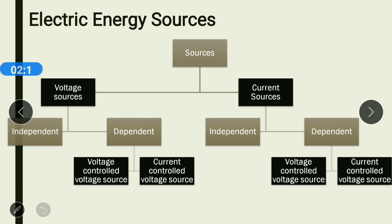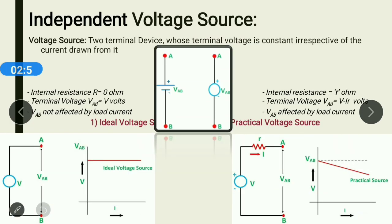That two-terminal device in the case of DC circuits is subdivided into two parts. One type of source is known as voltage sources and another type is known as current sources. Sources which give constant voltage as output are known as voltage sources, and sources which give constant current as output are known as current sources. We will also discuss independent and dependent types of voltage and current sources, and all possible categories of dependent sources.